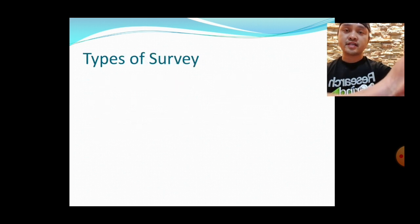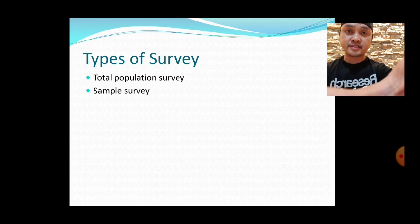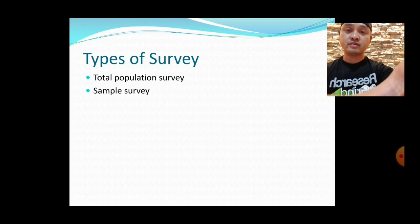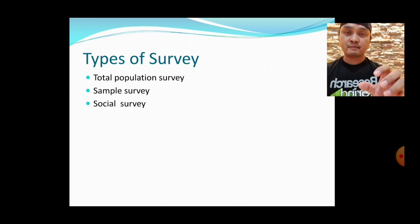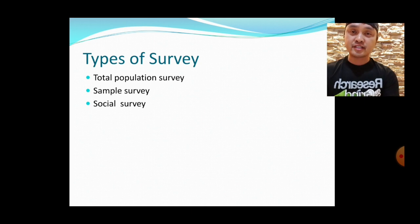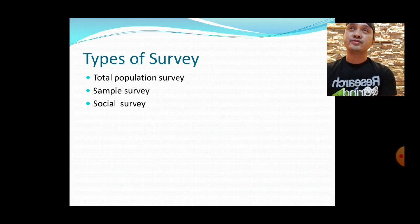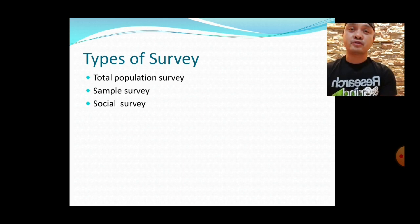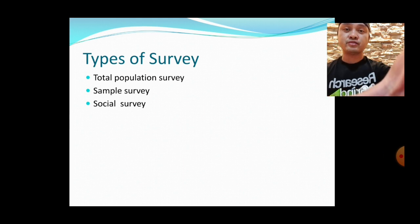Another type is the total population survey, where you involve the entire possible number of respondents. A sample survey, on the other hand, uses only a subset of the entire population. A social survey involves asking people about the current social situation — for example, issues about poverty, the use of learning management systems in education, or the appropriation of social amelioration programs.